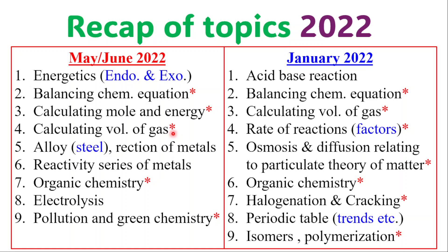Calculating volume of gas is a frequently tested topic as well. Alloys — specifically steel — were tested, along with reaction of metals, reactivity series of metals, and organic chemistry, which has always been tested. On the 2022 May/June paper, they specifically tested the homologous series, naming basic organic compounds, types of chemical reactions for the homologous series, isomers, and the homologous series for alcohols. Electrolysis, pollution, and green chemistry also appeared — green chemistry may pop up again.